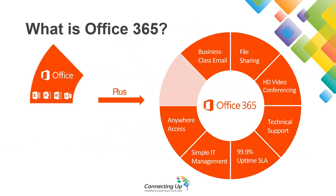We're also getting a few other things. We're getting business-class email which is hosted Microsoft Exchange, file sharing through OneDrive for Business, high-definition video conferencing through Skype for Business, technical support, a 99.9% uptime service level agreement — meaning Microsoft commit to having Office 365 online 99.9% of the month. The last few months it's been 99.98% so they're doing a great job. We also get easy IT management, access to documents everywhere, and SharePoint is included as part of the file sharing bundle.